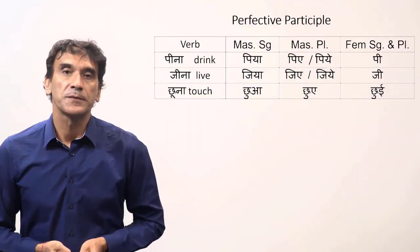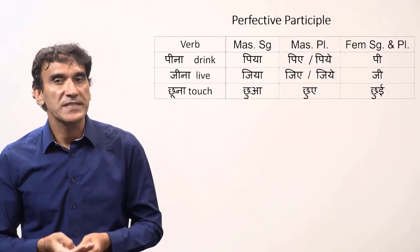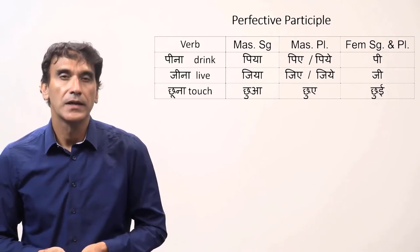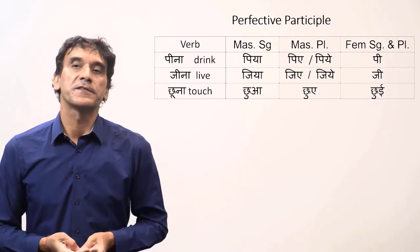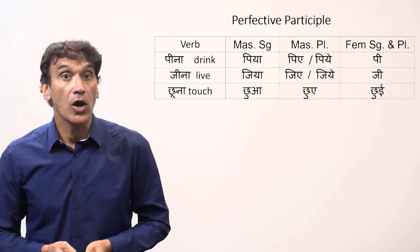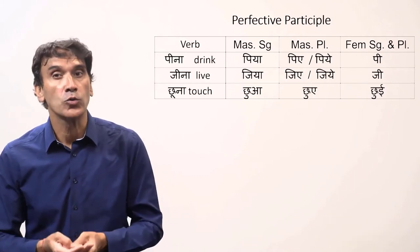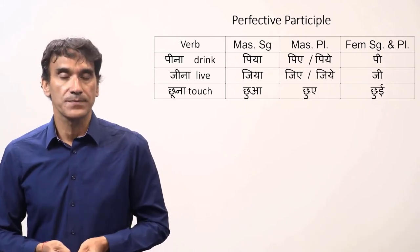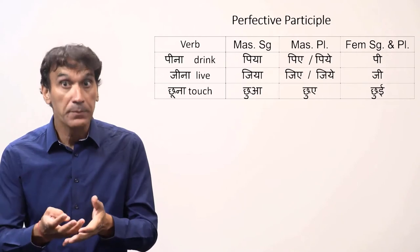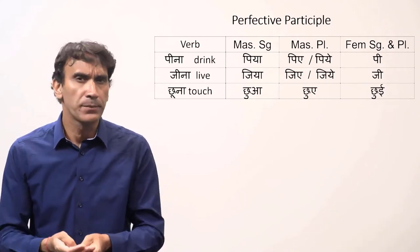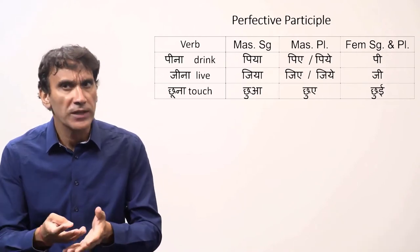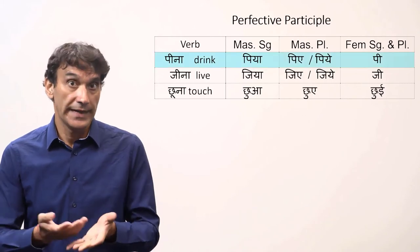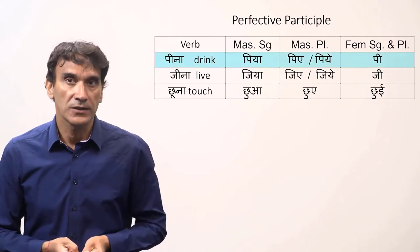There is another set of verbs that have some specific rules for making the perfective participles. The verbs with the root ending in long ee or long oo — the ee and oo get shortened for some forms. Keep in mind such verbs are very few in number, not more than 10 in total, and they are not very common except pina, to drink.